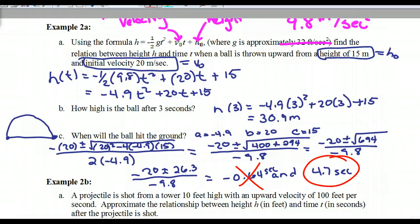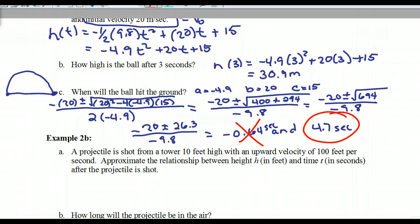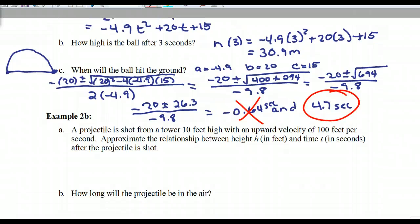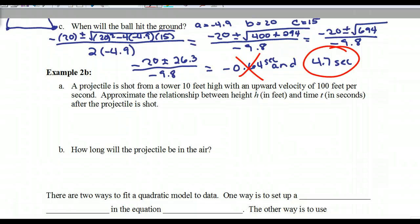Any questions about that? Okay, we're going to do this again. One more time. So this one is in feet per second. So we're going to use the 32 feet per second squared for the gravity. A projectile is shot from a tower of 10 feet high. There's your H-naught. With a velocity of 100 feet per second. That's your V-naught.